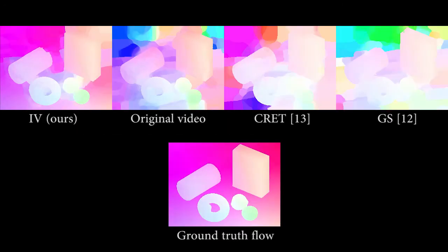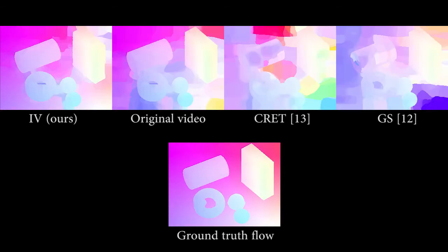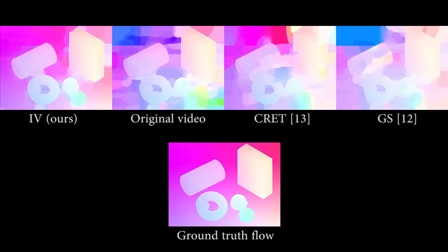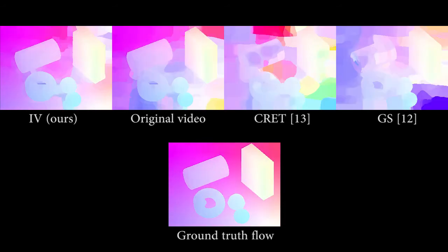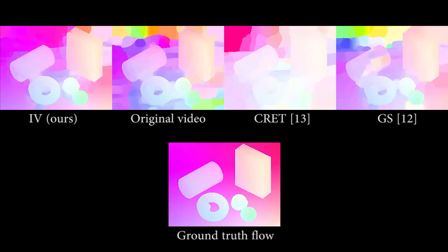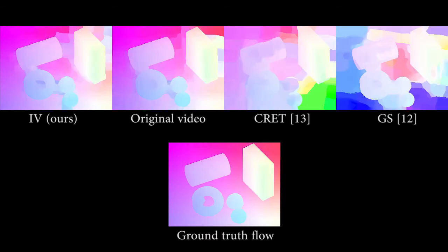Here, we illustrate the quality of flow estimation on the sequence of estimated albedo images produced by different methods. This provides a measure of how temporally coherent the albedo is. An albedo sequence with better temporal coherence will produce flow images that look closer to the ground truth flow. Our albedo sequence is clearly more coherent than the albedo estimated by previous methods.